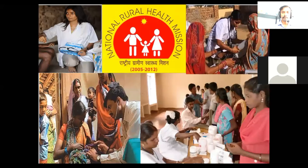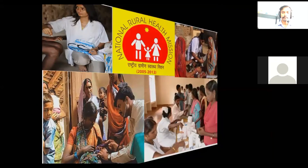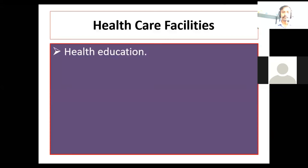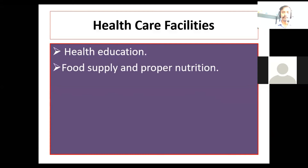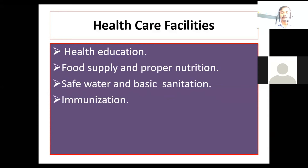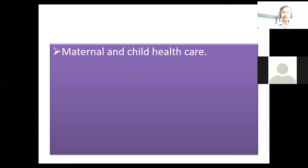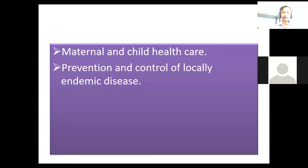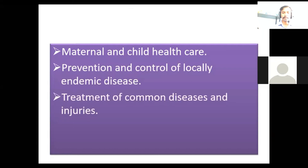National Rural Health Mission. Health care facilities in rural India include: first, health education; food supply and proper nutrition; safe water and basic sanitation; immunization; maternal and child health care; prevention and control of locally endemic diseases; treatment of common diseases and injuries; and provision of essential drugs.